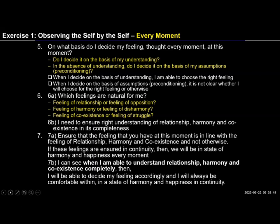If we do that, we feel comfortable, we feel calm, we are happy with it. So we can see that if we have these feelings ensured in continuity, we will be in a state of harmony and happiness every moment. In step 7b, we said that when I am able to understand relationship, harmony, and coexistence completely, I will be able to decide my feeling accordingly and will always be comfortable within - in a state of harmony and happiness in continuity.